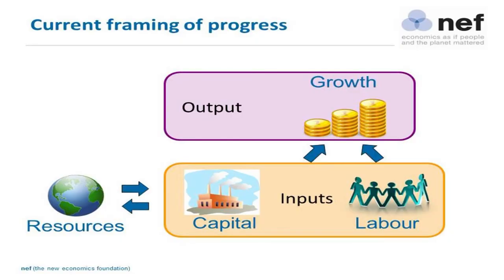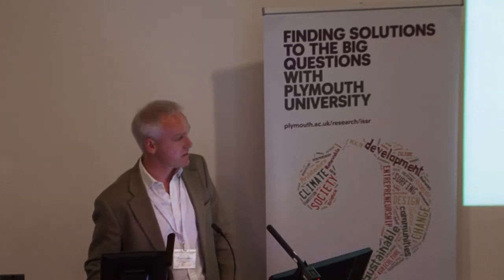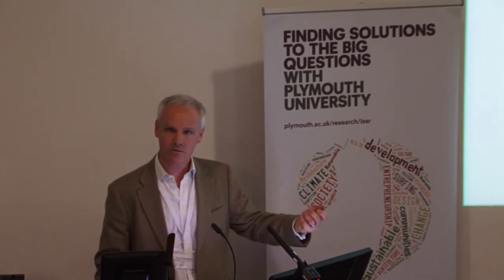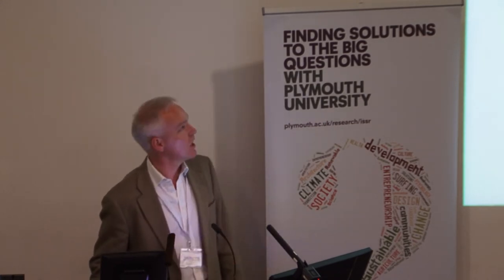Let me frame the way that we look at the economy. The dominant narrative of economics and progress goes: you've got resources, a planet, capital, labor — factors of production — and the end goal is growth. Even in Horizon 2020 it talked about 'sustainable growth,' and that's embedded right in the framing. The economy is seen as capital and labor; the planet is somehow external to it, and it's capital and labor that generate wealth.